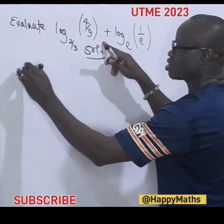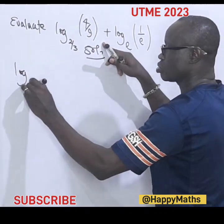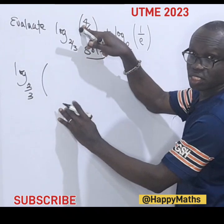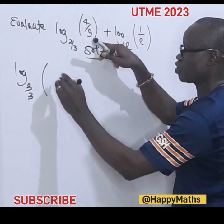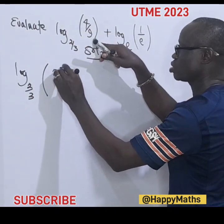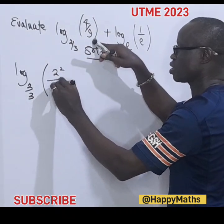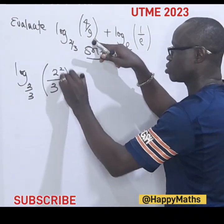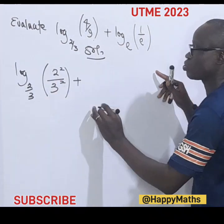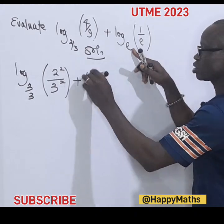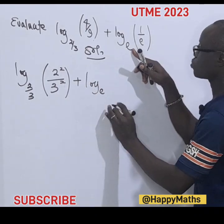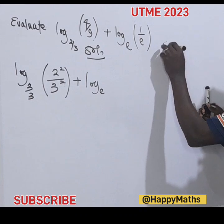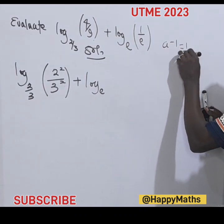We have the base of three over three, and this is a perfect number. We can take it as two raised to the power of two, then three raised to the power of two. Note that a to the power of negative one is one over a.